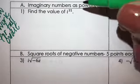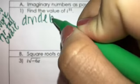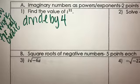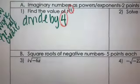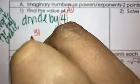We're going to divide by 4. We're dividing the exponent by 4, so that's going to be 31 divided by 4.